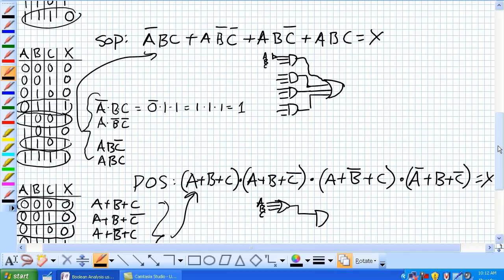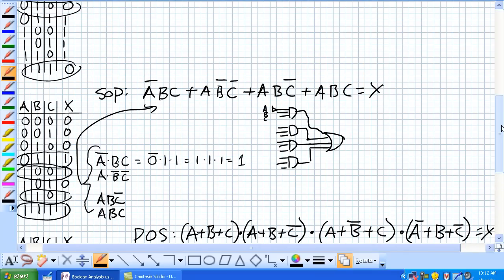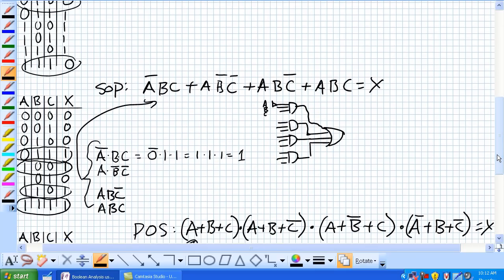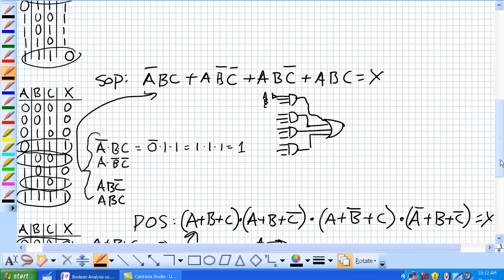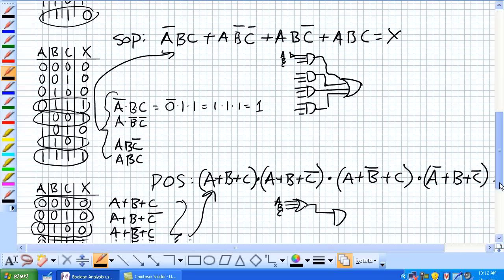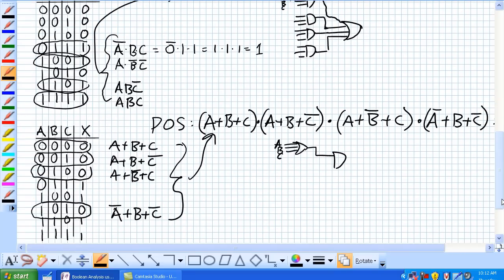We're going to move on to Karnaugh maps. One of the key take home points from this is just remember that these are standard expressions here. All the variables in the domain are in these things. And yes, you can simplify them later on, but they are standard expressions. It's just a pretty easy systematic way of determining what sum of products expression or product of sums from a given truth table.